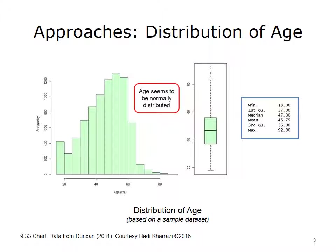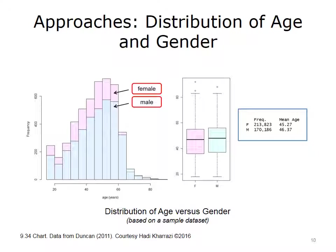This figure shows the methods used to explore the distribution of age in a population health data warehouse. The histogram shows a relatively normally distributed age in the underlying population, which is also confirmed by the box plot and the summary statistics on the right side. This figure replicates the same exploratory methods and diagrams as the previous slide. However, it splits the age based on gender. As depicted by the histogram, this population has a higher number of females in a large number of age ranges. The box plot shows that, despite the difference in the number of females versus males, the age means and quantities of both genders are very close. The summary box on the far right shows the numerical values of mean age for each gender.